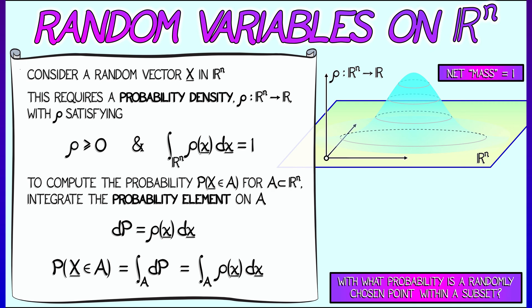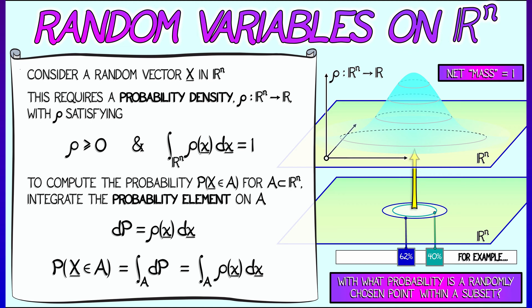So if you just pick a single point and say, what are the odds that I'm at this point? Well, it's zero, because the integral over a point is nothing, even if the density is really high. But if you choose some subset A, integrate, figure out the probability mass of that subset, that tells you the probability that a randomly chosen point lies in that. And as you look at larger and larger subsets, you get larger and larger probabilities.